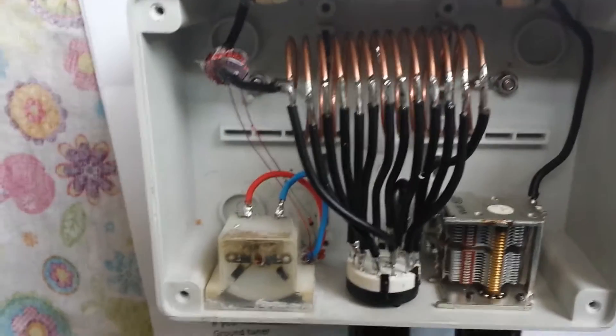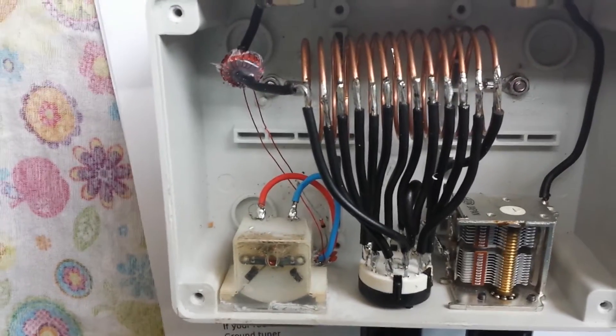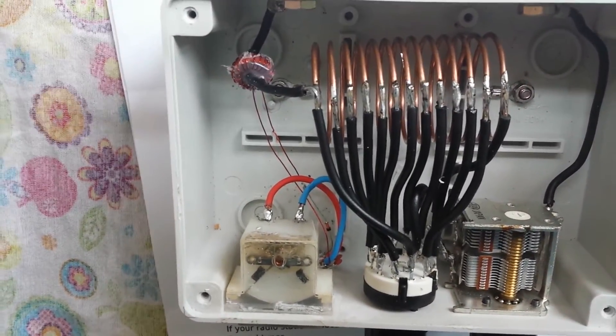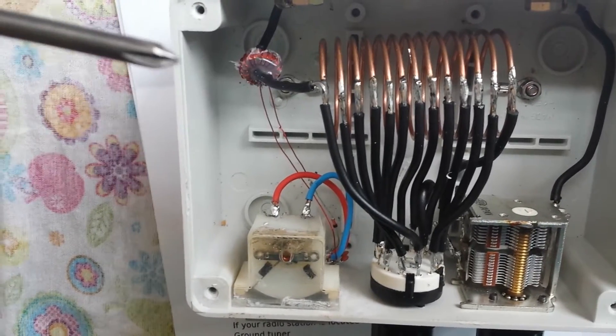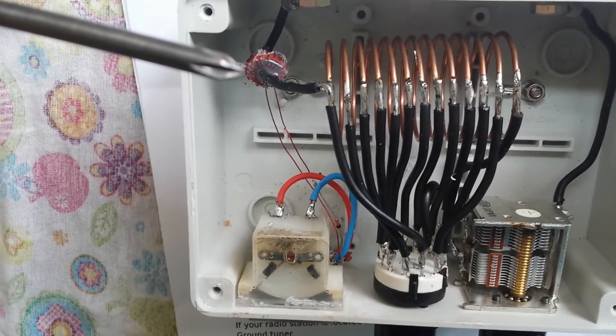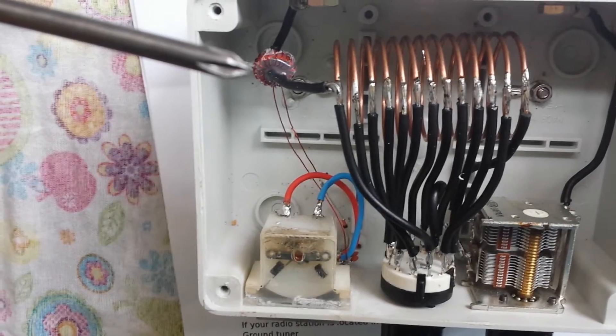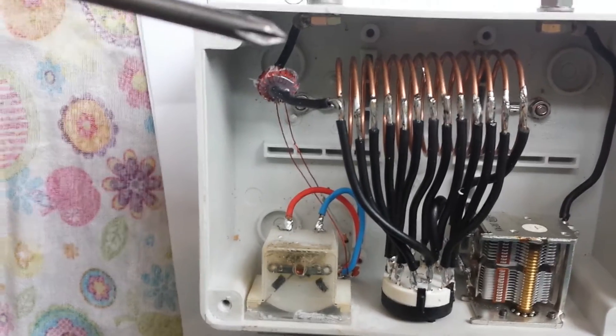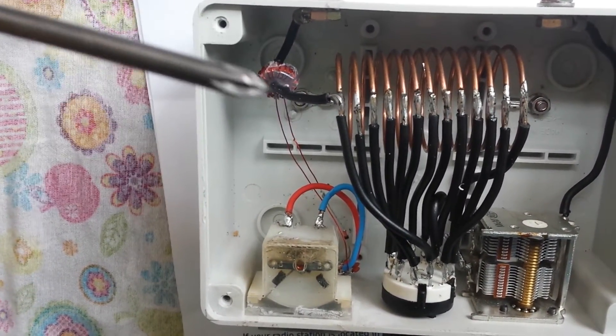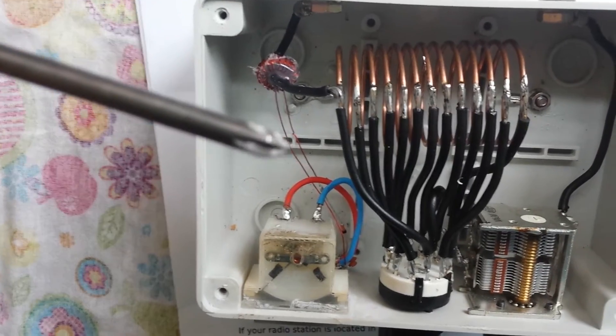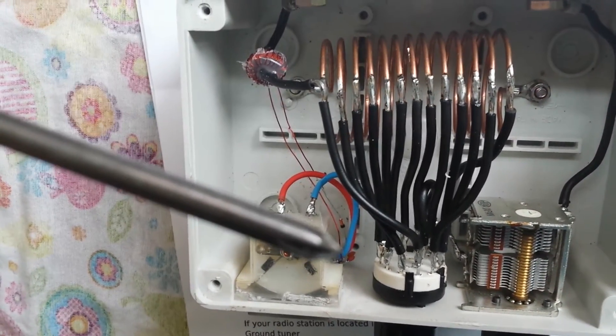The only part anybody may want to know more about is the actual meter side of it. Well, the meter works from this little coil, little T50-2 coil, 20 turns. Literally just slips over the antenna wire, sorry ground wire.